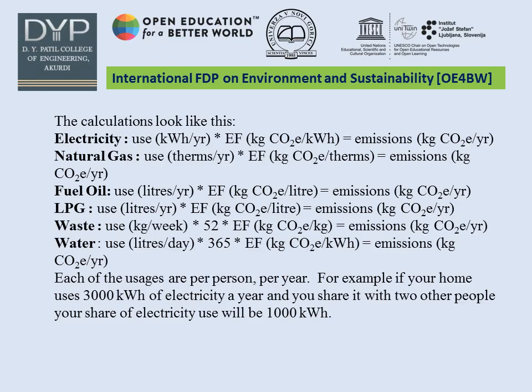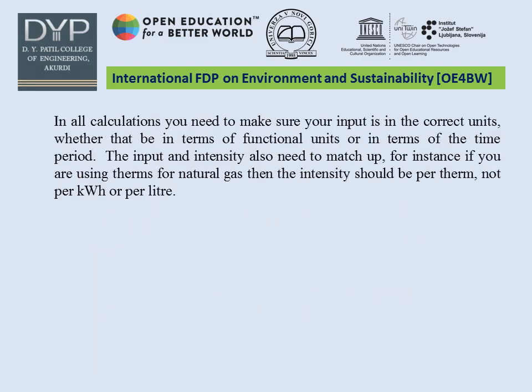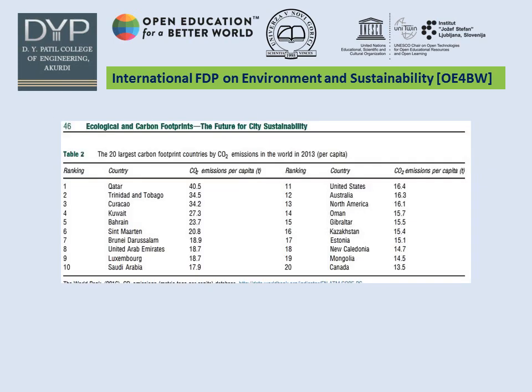Each of the usages is calculated per person per year. In all calculations, you need to make sure your input is in the correct unit — whether in terms of functional units or time period. The input and intensity also need to match. For instance, if you are using terms of natural gas, then the emission intensity should be per therm, not per liter.